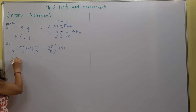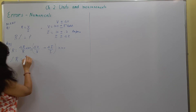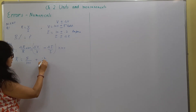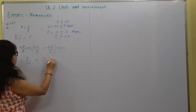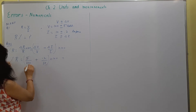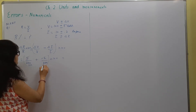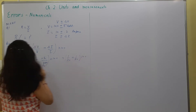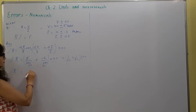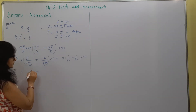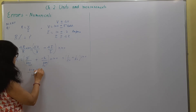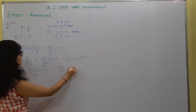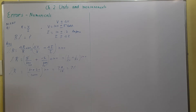So this will give us percentage error in resistance is equal to: delta V is 5 and V is 100, plus delta I is 0.2 upon I is 10, multiplied by 100. This gives us 1 upon 20 plus 1 upon 50 into 100, which gives us 7% as the percentage error in the resistance.